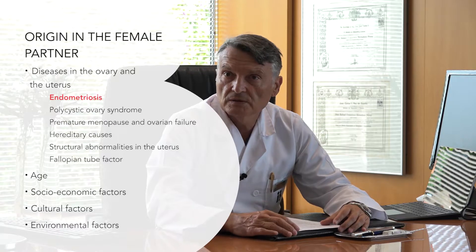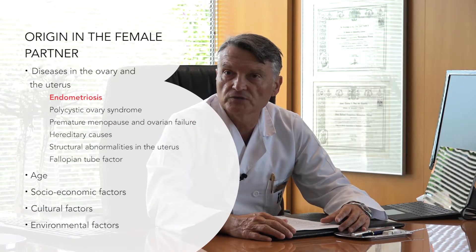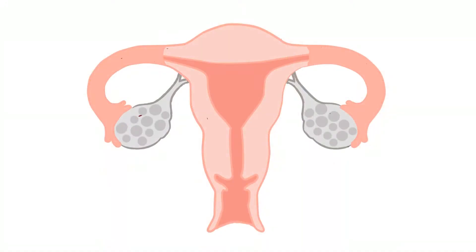The most frequent causes are, on the one hand, endometriosis — that is, the presence of uterine tissue outside its natural location. As well as causing painful periods and pelvic pain, endometriosis has an impact on fertility in women.